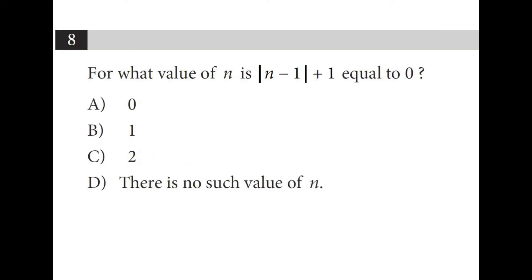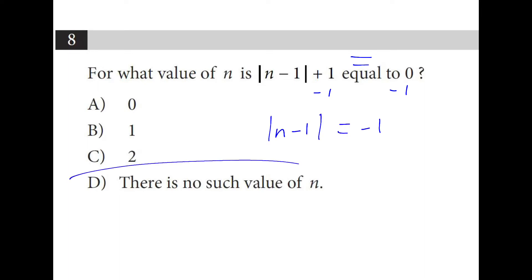We have this scenario where something plus 1 is equal to 0. If we subtract 1 from both sides, we'll end up with the absolute value of n minus 1 is equal to negative 1. There's no such value, because the definition of absolute value is distance from 0 — it can't be negative.